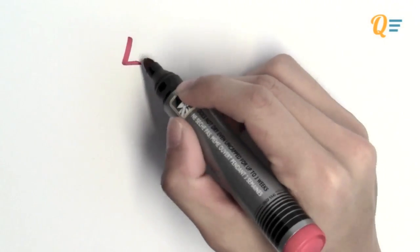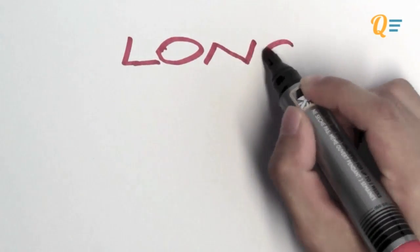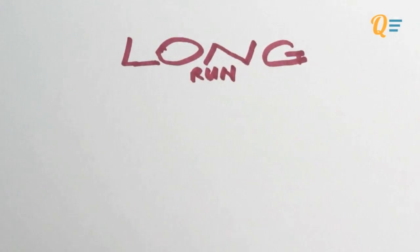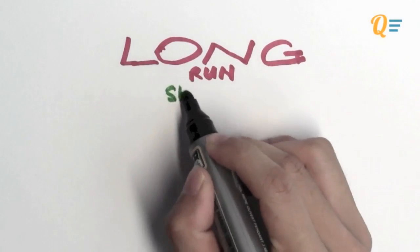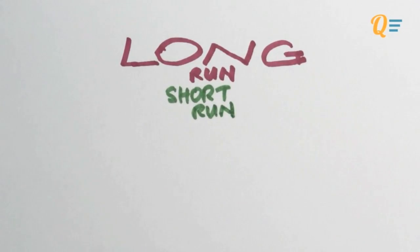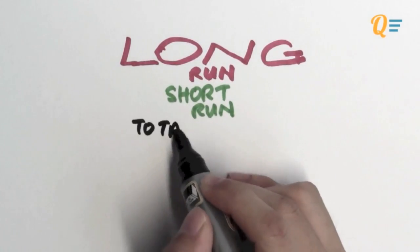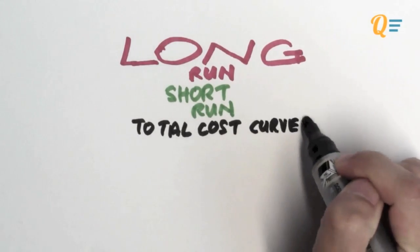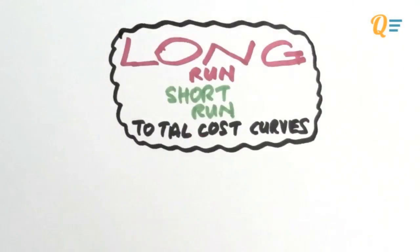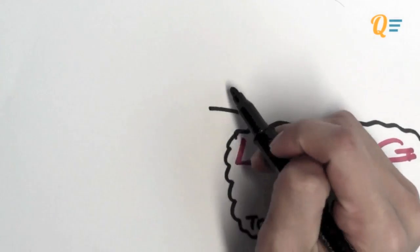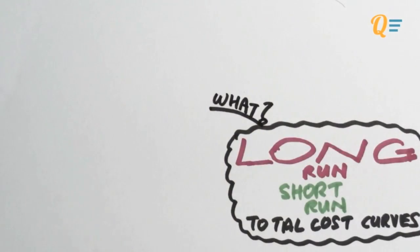Okay, so the purpose of this video is to pick up from where we left off from the isocost and isoquant, and we'll be talking about the long run and short run total cost curves. Now this video is going to be very important because this is going to determine how well you understand things like the marginal cost curves as well as average cost curves for the long run and the short run, so pay attention.